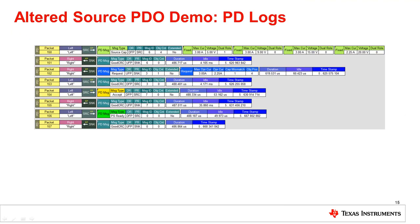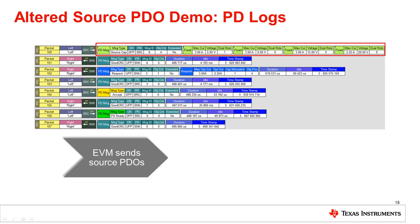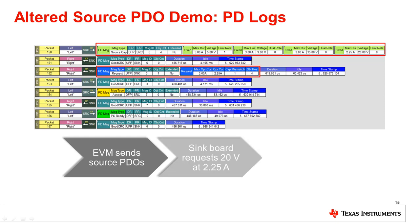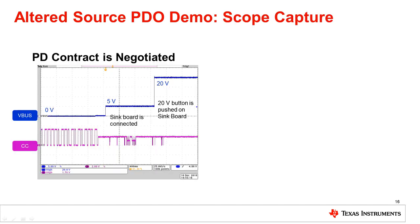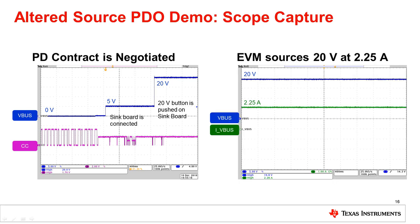Looking at the PD logs, the EVM first sends its PDOs — the 20 volt PDO now offers 2.25 amps of current. The sink requests the 20 volt 2.25 amp PDO. The EVM then accepts and begins to source 2.25 amps. The scope capture also shows this negotiation taking place. When the 20 volt button is pushed on the sink board, the EVM begins to source 20 volts, and the current sent to the sink board is 2.25 amps.